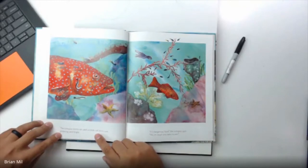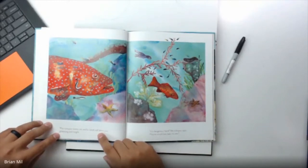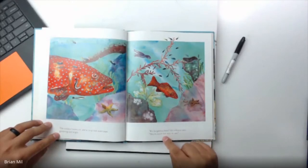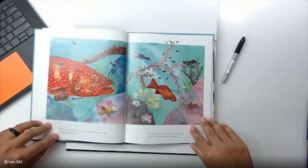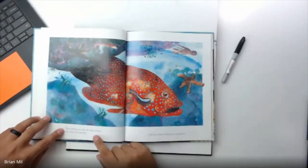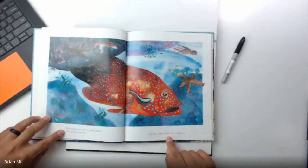The octopus swims on, and the coral cod skims past, glistening and bright. It's dangerous here, the octopus says, you're much too easy to see. But nothing can see me when I hide, the coral cod tells her, and it slips under a ledge and disappears.